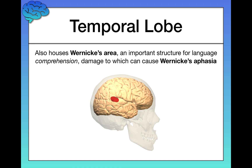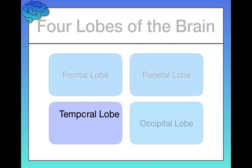Wernicke's aphasia is very different from Broca's aphasia. It's sometimes called fluent aphasia because, if you didn't understand the language, the person would sound perfectly fluent — proper intonation, no awkward pauses, all the words at their disposal. But what comes out is essentially gibberish: English words that have no meaningful relation to each other or to what's going on. It's a lack of understanding — they have trouble attaching meanings to the appropriate words.